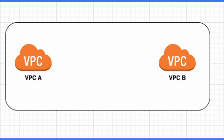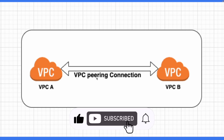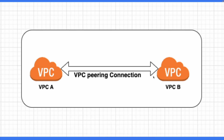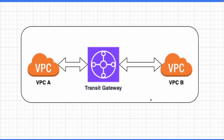Let's understand how it works with an example. In this image you can see I have two VPCs: VPC A and VPC B. To establish a network connection between these two, we can create a VPC peering connection, and the moment I create it these two VPCs can communicate with each other. Similarly, I can achieve the same thing with Transit Gateway by connecting both VPCs to it.